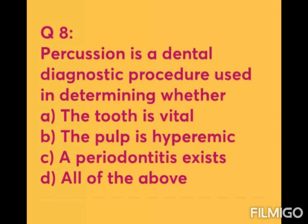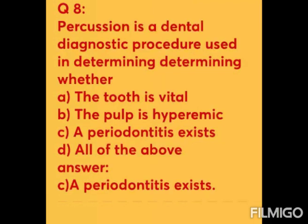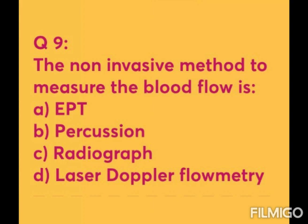Question 8: Percussion is a dental diagnostic procedure used in determining whether — Option A: the tooth is vital. Option B: the pulp is hyperemic. Option C: a periodontitis exists. Option D: all of the above. The answer is Option C — a periodontitis exists. When percussion is performed, it is mainly used to detect periapical involvement, confirming that periodontitis exists.